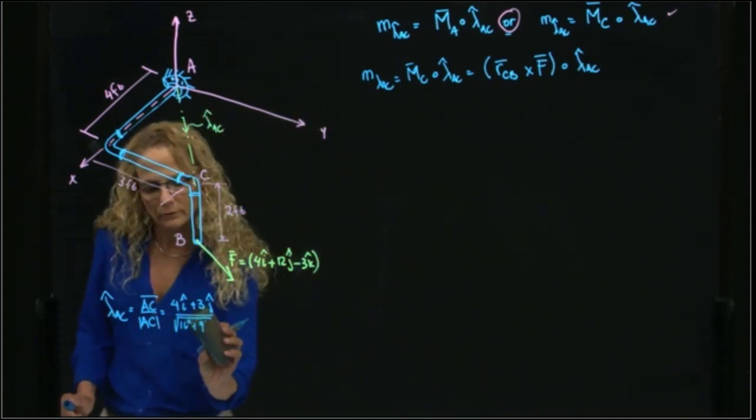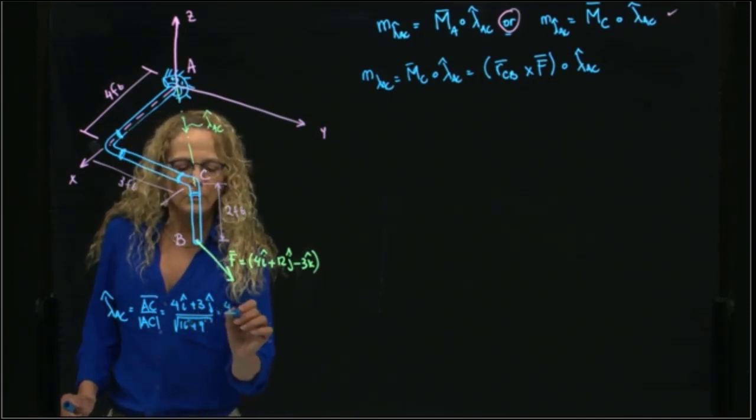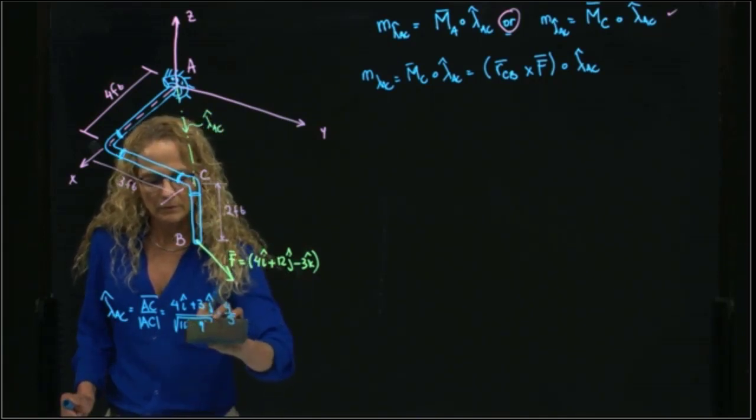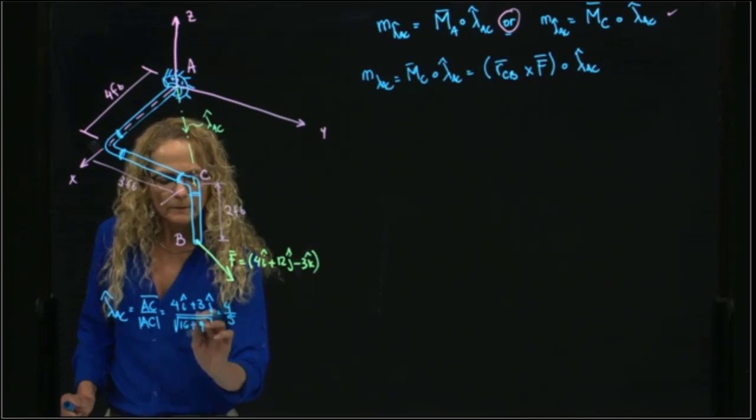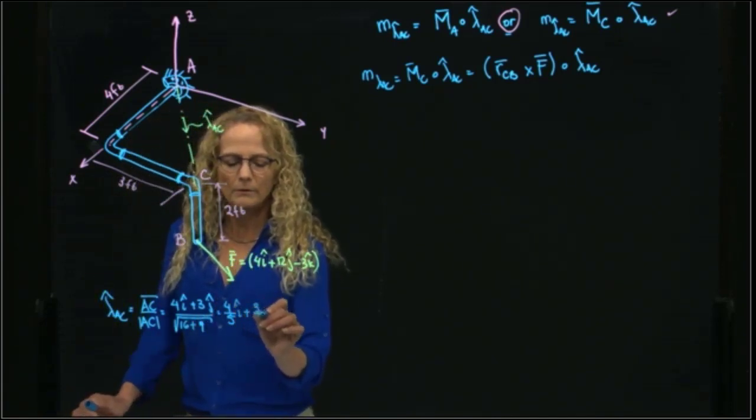So that will be equal to 4 over 5 in i plus 3 over 5 in j. That's equal to 0.8 in i plus 0.6 in j.